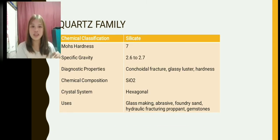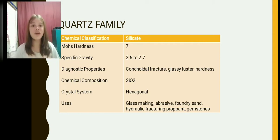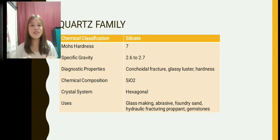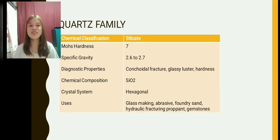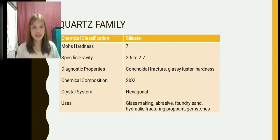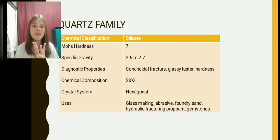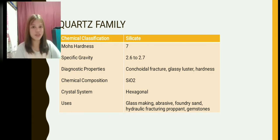Further chemical classification: Mohs hardness is 7. Specific gravity is 2.6 to 2.7. Diagnostic properties include conchoidal fracture, glassy luster, and hardness. Chemical composition is silicon dioxide (SiO₂). Crystal system is hexagonal. Uses include glassmaking, abrasive, foundry sand, hydraulic fracturing proppant, and gemstones.